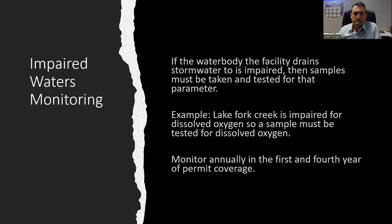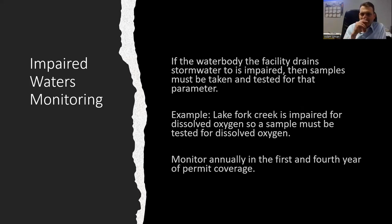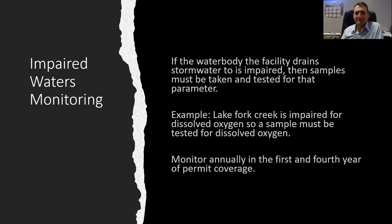Impaired waters monitoring: if the water body your facility drains into or discharges to is impaired for something, you have to take samples for that parameter. For example, I've done work for years on a project here in Idaho that discharges to Lake Fork Creek, which is impaired for dissolved oxygen — so I have to take a sample and test it for dissolved oxygen. This is done annually in the first and fourth year of permit coverage.